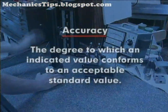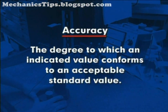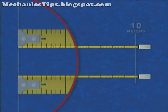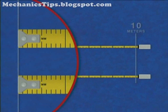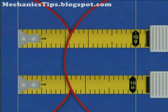Accuracy is defined as the degree to which an indicated value conforms to an acceptable standard value. For example, two tape measures may both have the same resolution or graduation — in this case millimeters. However, if these tape measures are not equally accurate, their differences become more noticeable at greater lengths.